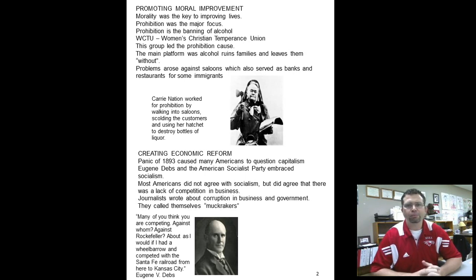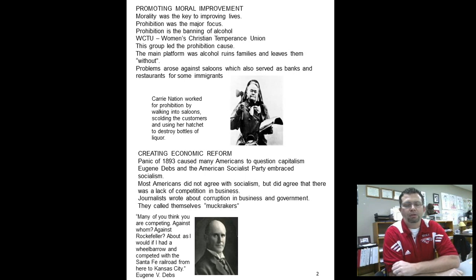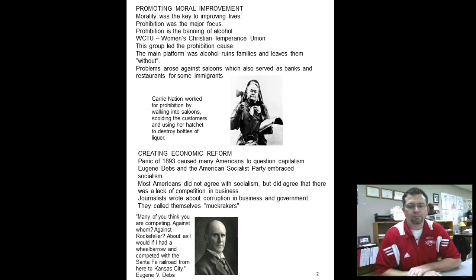The moral improvement movement focused mainly on the temperance movement — getting rid of alcohol in society. Alcohol was blamed for ruining families. The man of the house would work all week, get paid, stop off at the saloon on the way home, and waste his entire paycheck on drinking. The family would have no food, no anything, and have to scrape by the entire week. The problem with shutting down bars is that they also served as banks and restaurants for immigrant neighborhoods in big cities. So if you shut down a bar, you're also shutting down places to eat and where immigrants kept their money.